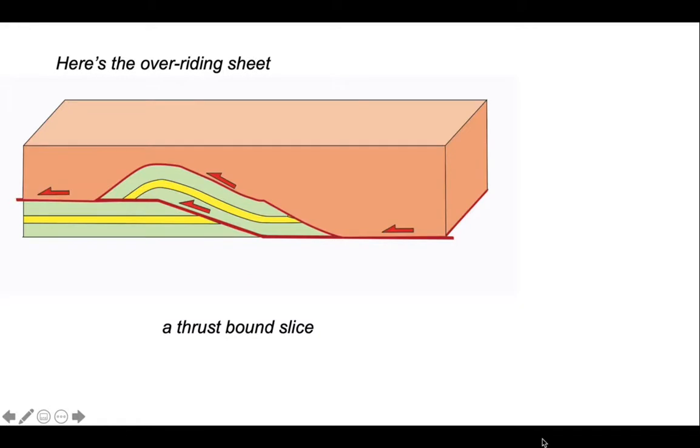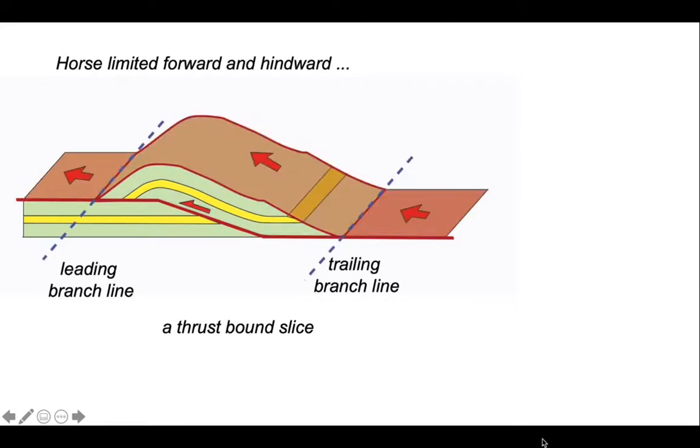Now let's put on the overriding thrust sheet. Here's our thrust bound slice. We can see that the leading edge of that slice is defined by where the two thrusts come down together and join, and the trailing edge is where the two thrusts combine again. These are called branch lines. The one at the front is the leading branch line, the one at the back is the trailing branch line, and they limit the extent of the horse towards the front and back.